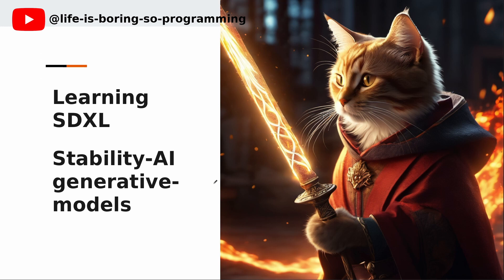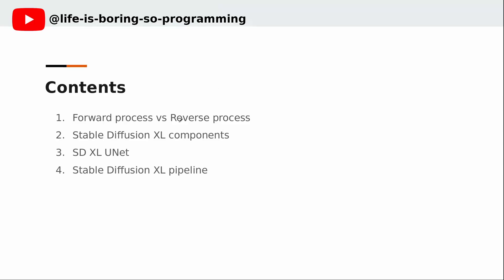Today we are going to look at the original source codes of SDXL from Stability AI Generative Models. We will learn what it is and what it does inside. The contents of the video are: 1. The forward process and the reverse processes. 2. The stable diffusion components. 3. The UNet of SDXL. 4. The pipeline of the SDXL.